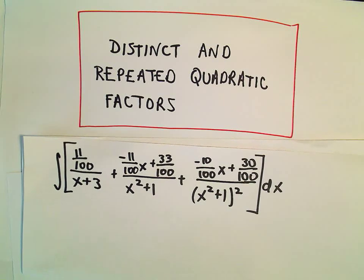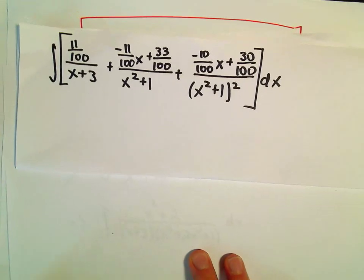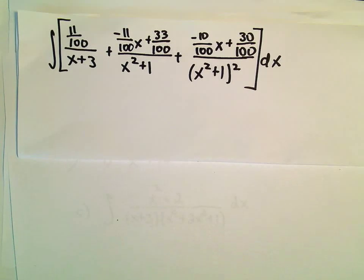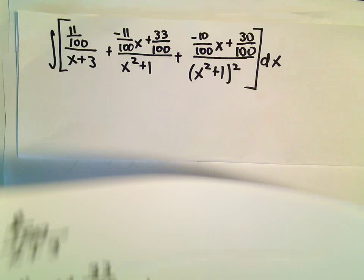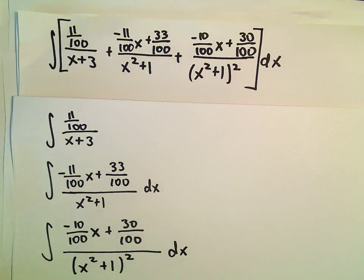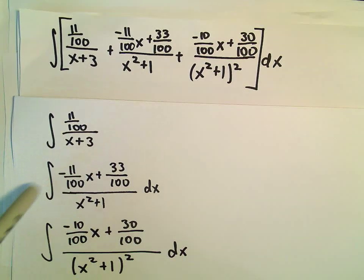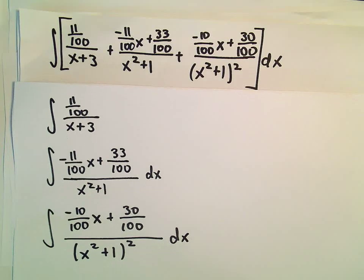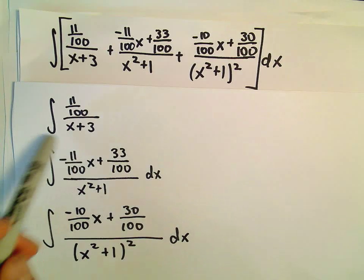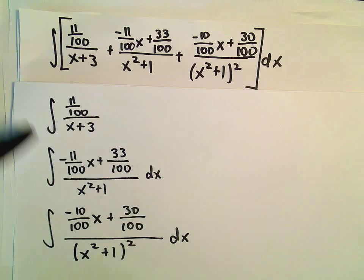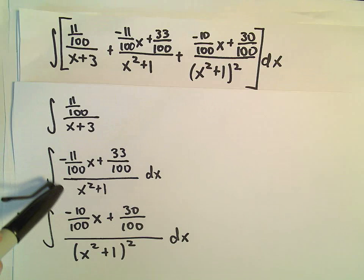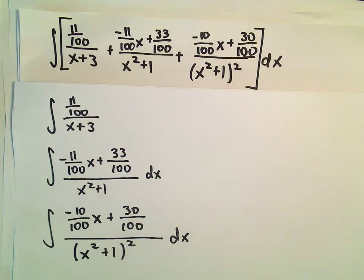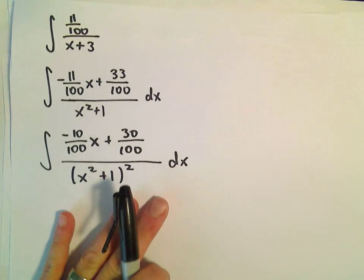Here we're going to finish off our partial fractions problem, and we reduced it to this integral in the last video. I've broken it up into three different integrals, and I'm going to evaluate each one piece at a time. The final answer is just all the solutions added back together. The first two are pretty typical. The third one is actually going to involve a new idea that we haven't quite looked at yet.